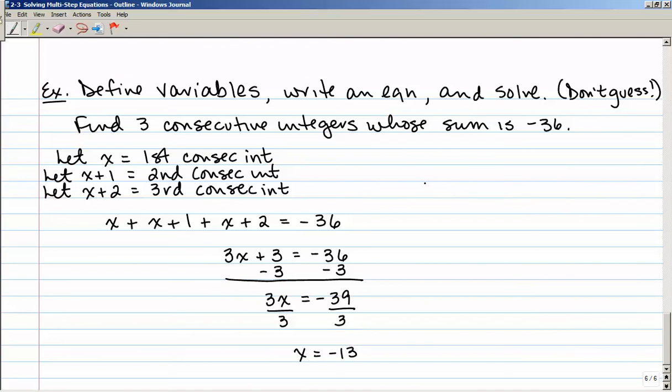So negative 13 is my first consecutive integer. And my second one is going to be x plus 1. And when I add 1 to negative 13, I get negative 12. And when I add 2 to negative 13, I get negative 11. So my three consecutive integers that add up to negative 36 are negative 13, negative 12, and negative 11.